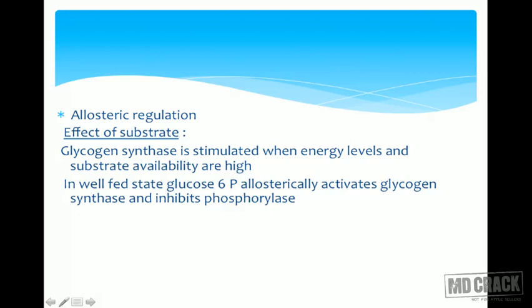When glucose-6-phosphate is in excess, it signals glycogen synthase to store more glycogen. At the same time, it inhibits glycogen phosphorylase, signaling that there's no need to break down glycogen since glucose is already available from the diet. That is the allosteric mechanism in the well-fed state.